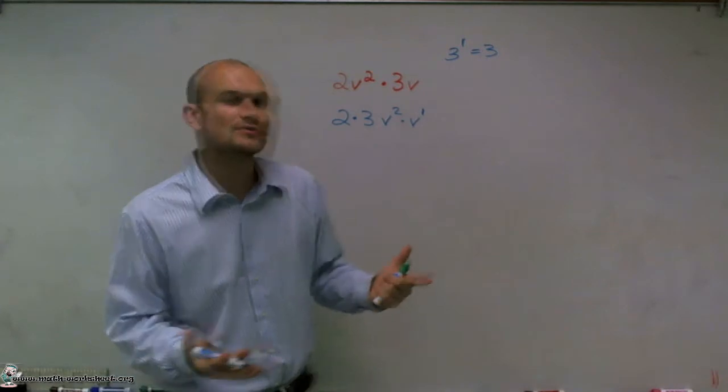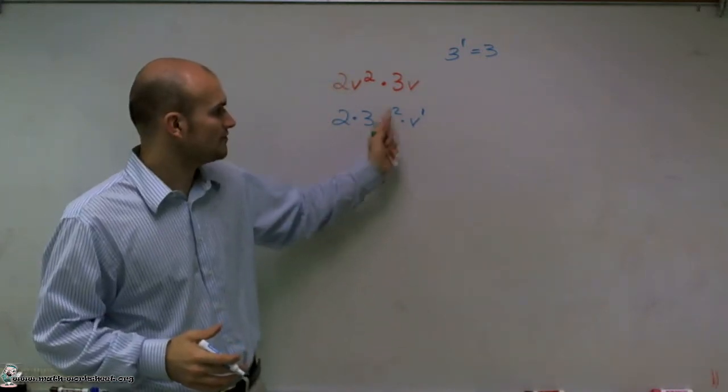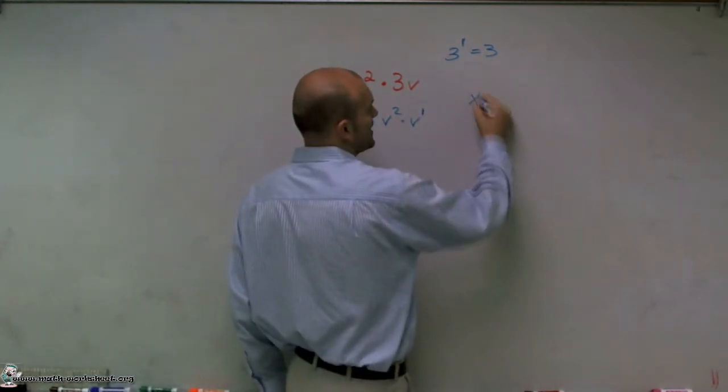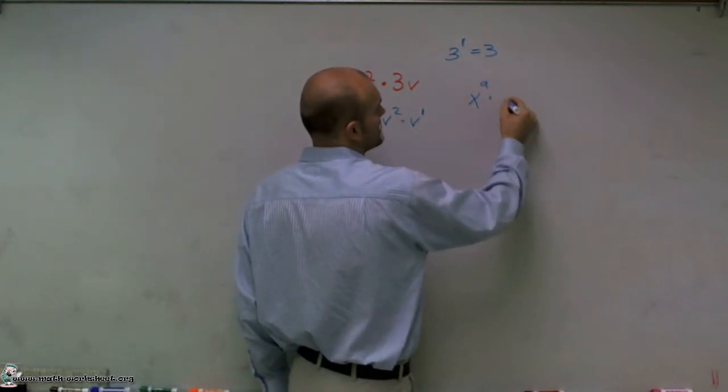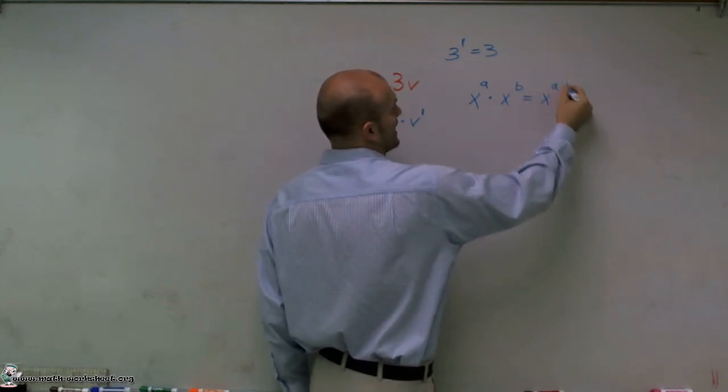Well, in this case, we're going to use the properties of exponents to solve v squared times v to the first. And the thing you need to know is if I have x to the a times x to the b, that's going to equal x to the a plus b.